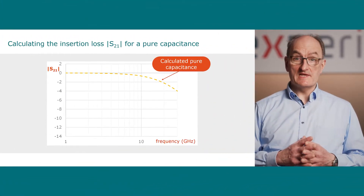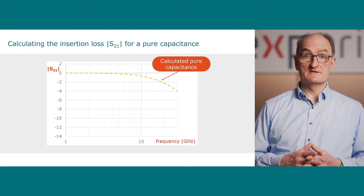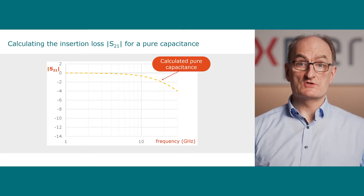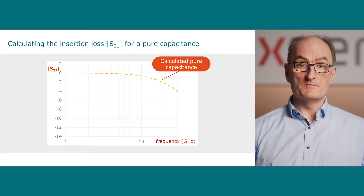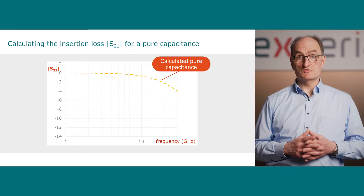We would like to show that it is more helpful to rather look at scattering or S-parameters when considering the radio frequency performance of ESD protection devices. In the first picture, we show the calculated insertion loss for a pure capacitance as a dashed line. This calculation shows the expected behavior of a low-pass filter. Insertion loss is the magnitude of the scattering parameter S21.